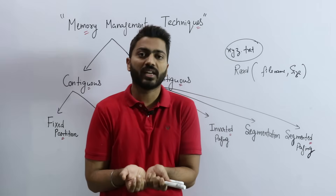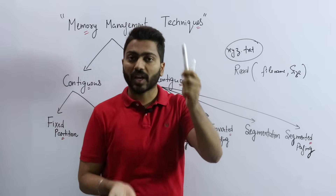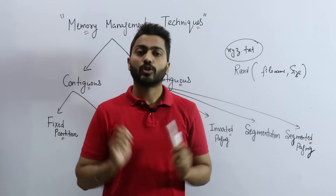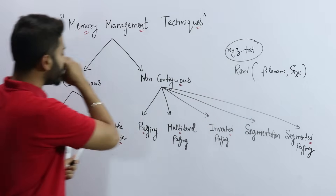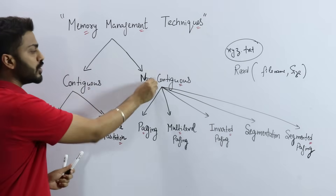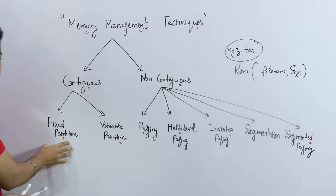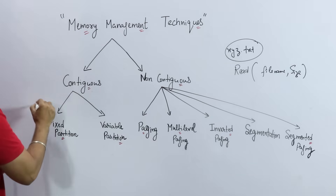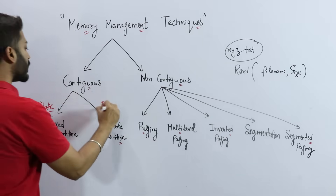So the more processes available in the ready state, the more benefit we get, and the more we can utilize the CPU. To increase the degree of multi-programming and fill the ready state, we need to properly utilize RAM, that is primary memory. Memory management techniques are all based on this. Broadly, there are two types: contiguous and non-contiguous. Contiguous includes fixed partitioning (also called static partitioning) and variable partitioning (also called dynamic partitioning).